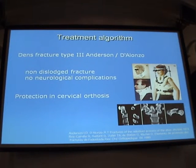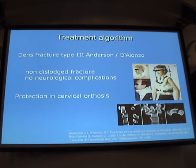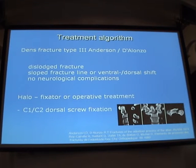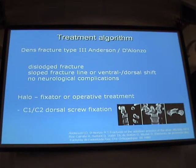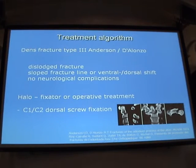For dense fracture type 3 Anderson-D'Alonzo with no dislodgement and no neurological complications, we apply cervical protection for 6 to 8 weeks. For displaced fracture line or ventral-dorsal shift with no neurological complications, we apply a halo fixator or, depending on the situation and comorbidities, operative treatment.